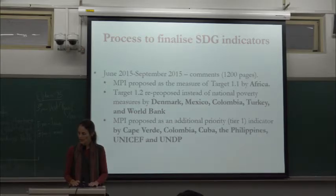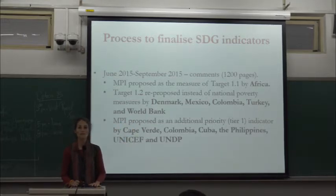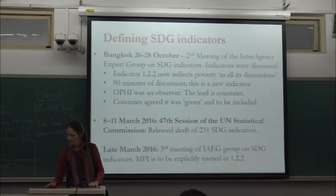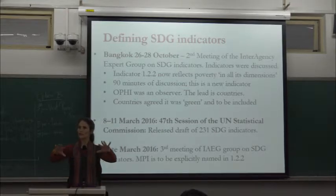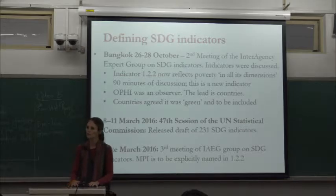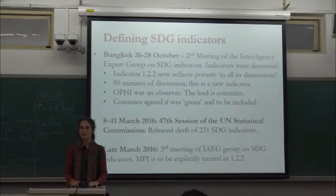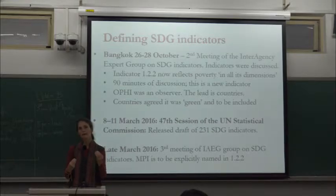The countries named are among the 28 members of the Interagency Expert Group — China is one as well. The first meeting after June was in Bangkok, with discussion of all indicators. The MPI discussion lasted perhaps longer than any other — 90 minutes — because it's a new indicator that many are not familiar with. There was unanimity particularly in African, Asian, and much of Latin American countries that it was a priority, but some resistance from a minority that ended up seeming effective.